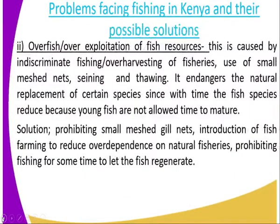The second problem is overfishing, or over-exploitation of fish resources. This is caused by indiscriminate fishing and over-harvesting of fisheries, including the use of small mesh nets. This hinders the natural replenishment of certain species, as fish populations reduce over time because young fish are not allowed to mature. There is no natural breeding cycle.